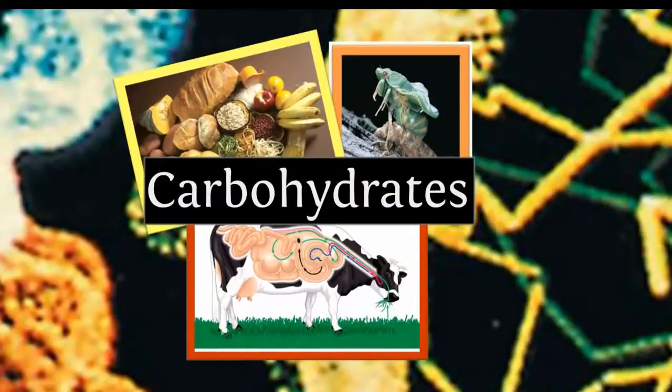Now that we know how macromolecules are made, let's look at our first class of macromolecules, carbohydrates. But first, let's watch a video on sugar.